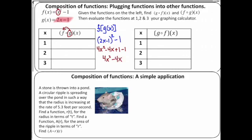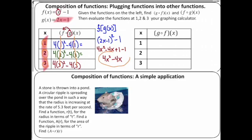Now let's take that and evaluate it for the table values 1, 2, and 3. Plugging in 1: 4 minus 4 is 0. Plugging in 2: 16 minus 8 is 8. And plugging in 3: 4 times 9 is 36, minus 12, which gives us 24.